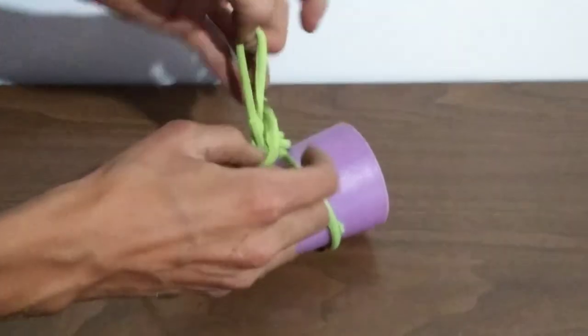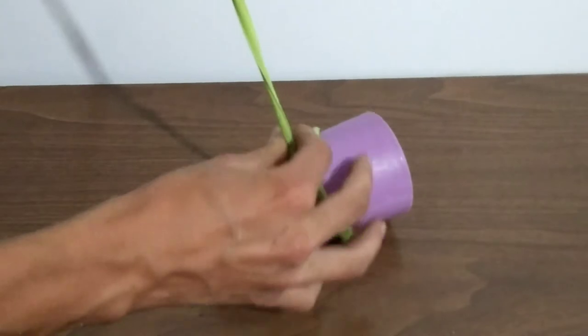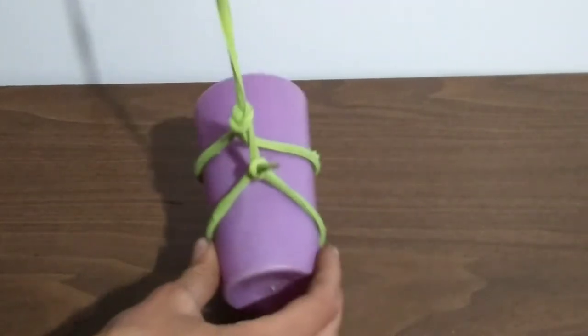Then you pull another loop through that, and finally you pull the string through that all the way, pulling it tight, and that shouldn't slip for you. And there you go, there's a cat harness.